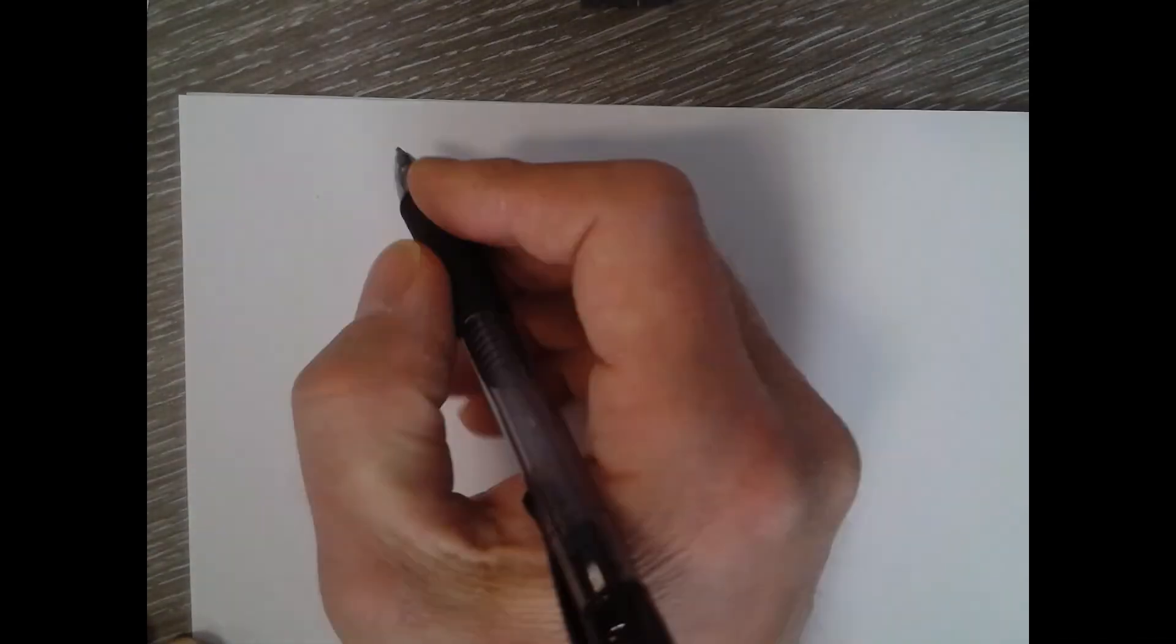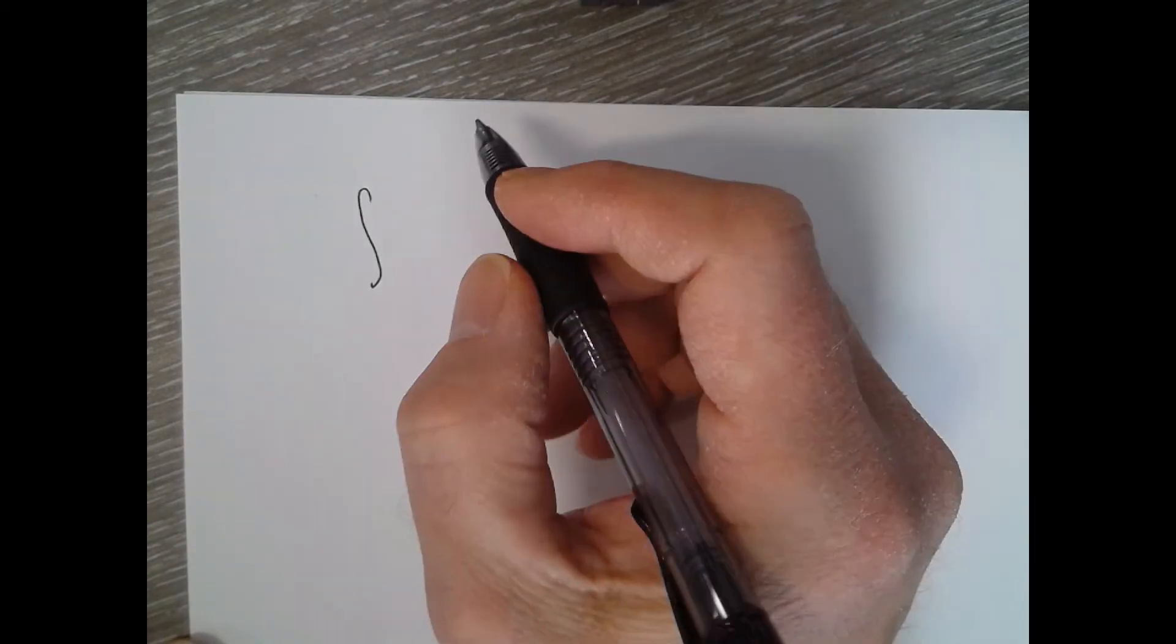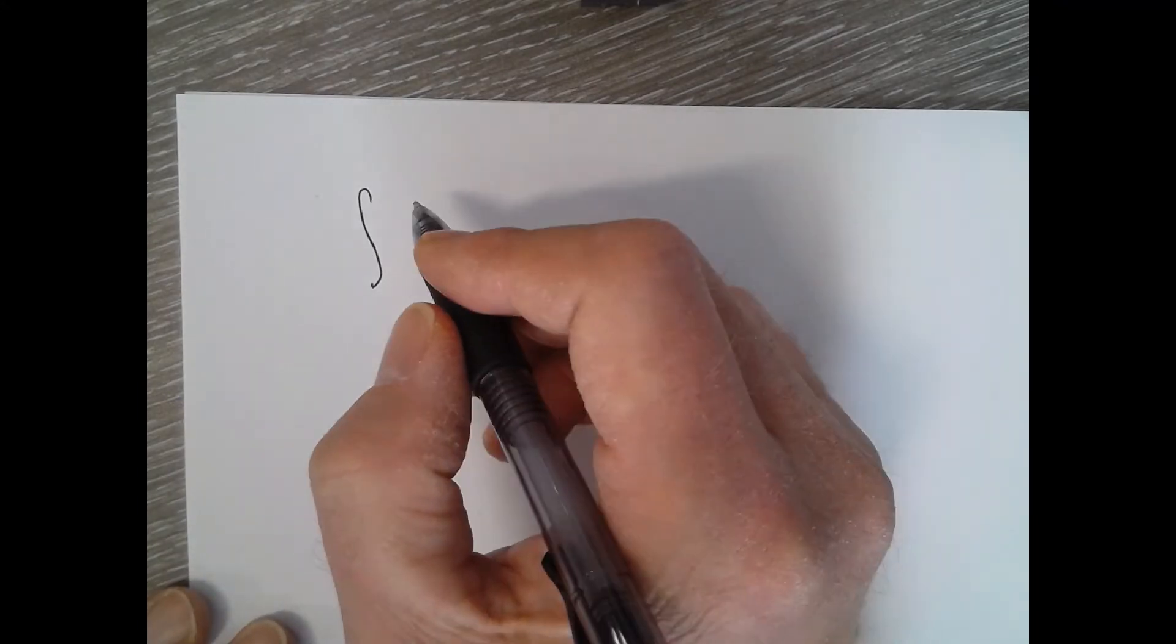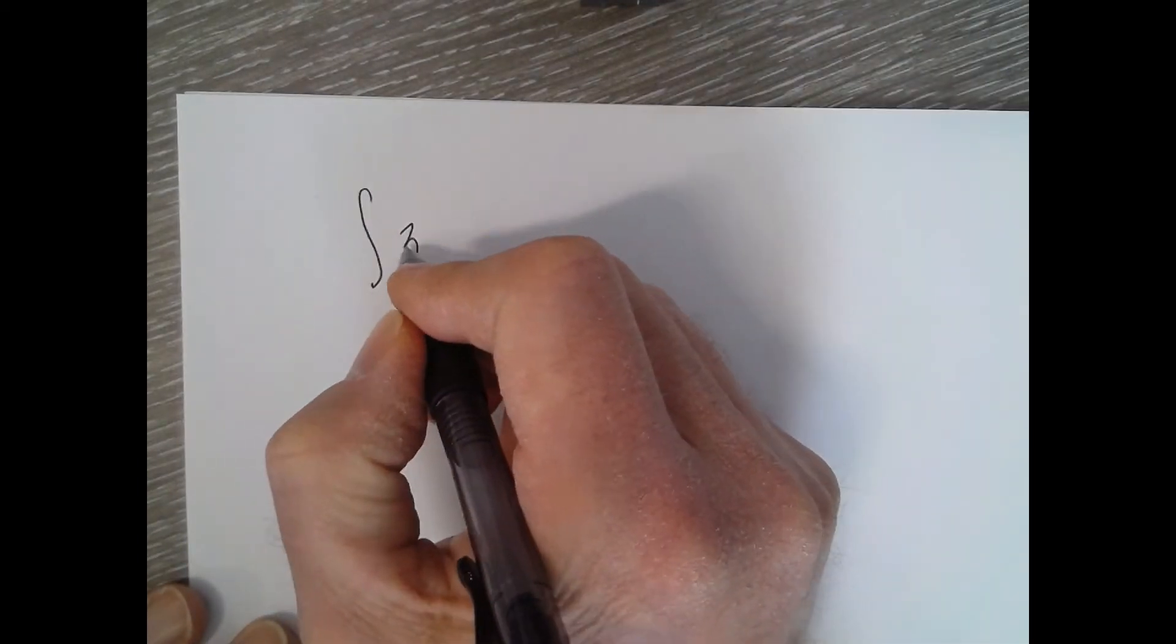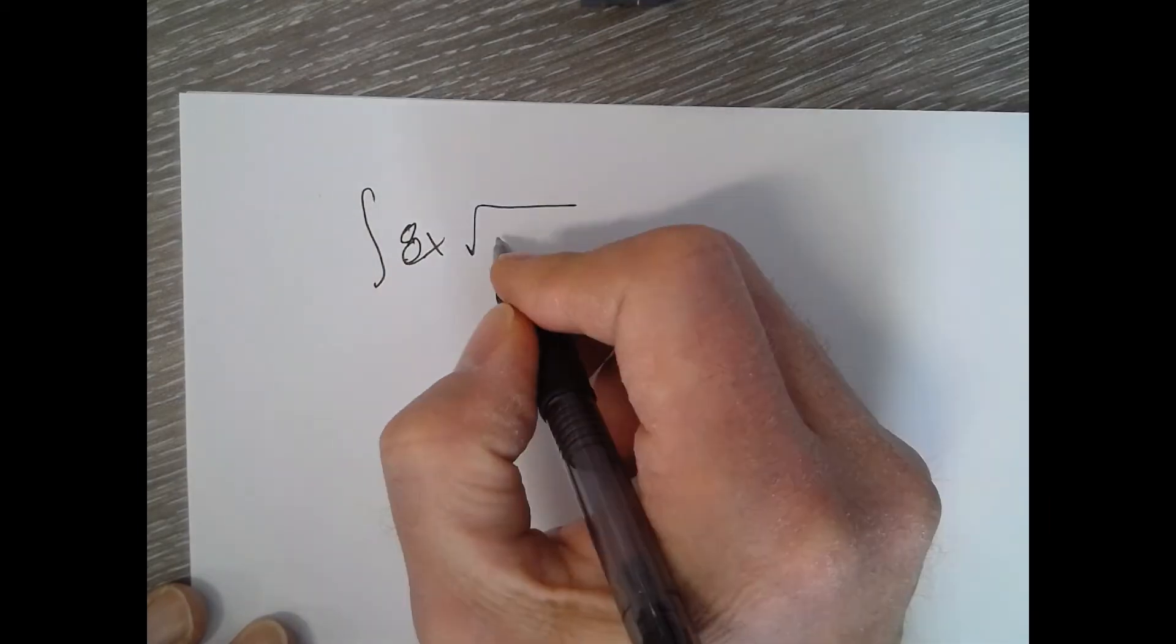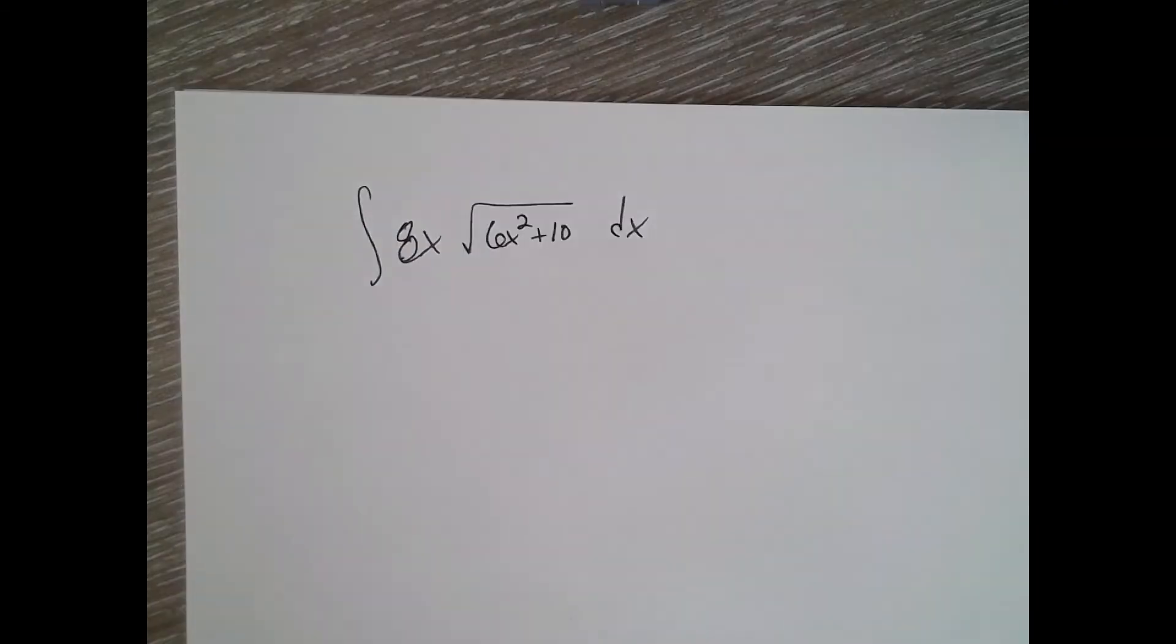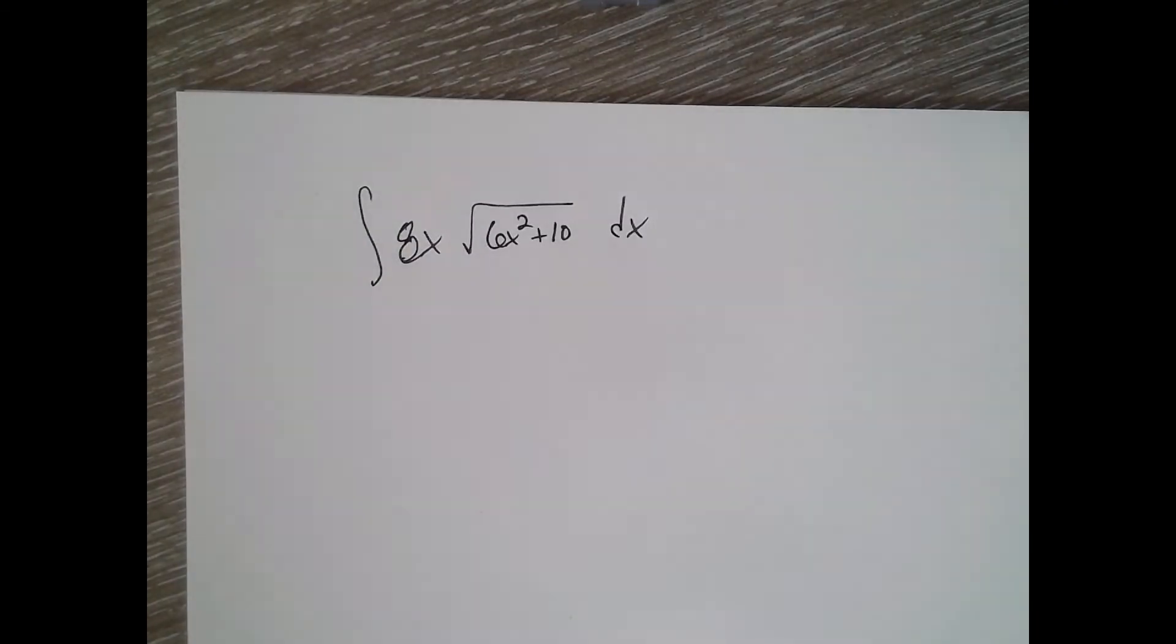All right, why don't you try that. I'll give you some time. So everybody chose 6x squared plus 10 as your u? Good. I'm just going to go through this. You can keep working if you want.